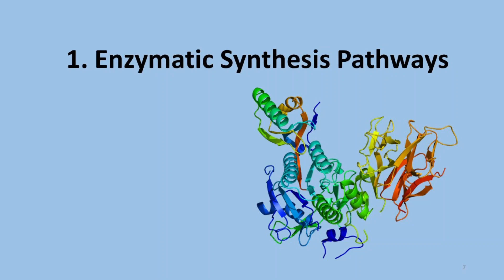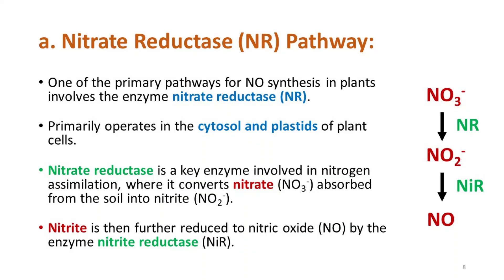Let's talk about enzymatic synthesis pathways first. The first is the nitrate reductase pathway. One of the primary pathways for nitric oxide synthesis in plants involves the enzyme nitrate reductase. Nitrate reductase is a key enzyme involved in nitrogen assimilation, where it converts nitrate absorbed from the soil into nitrite. Nitrite is then further reduced to nitric oxide in a reaction catalyzed by nitrate reductase. This pathway primarily operates in the cytosol and plastids of plant cells.